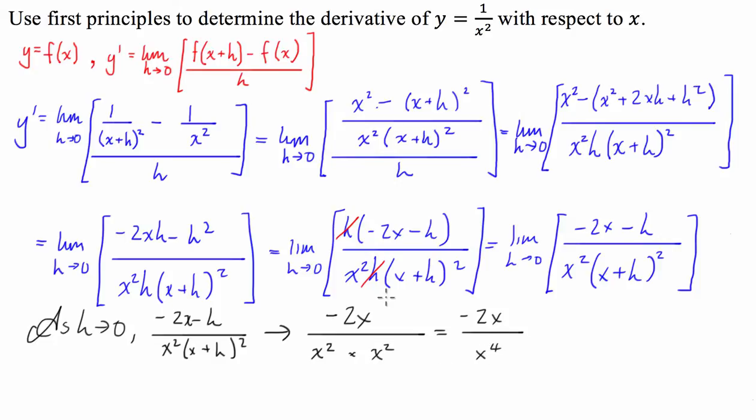Now, what I can do is I can do a little bit of cancelling here. I can go, well, I'm going to cancel that x with one of those powers. And so, what I'm left with is I'm left with -2 over x to the power of 3. So, what I can finally write is I can say, therefore, y dash, or the derivative, is equal to -2 divided by x cubed. And that's our solution.